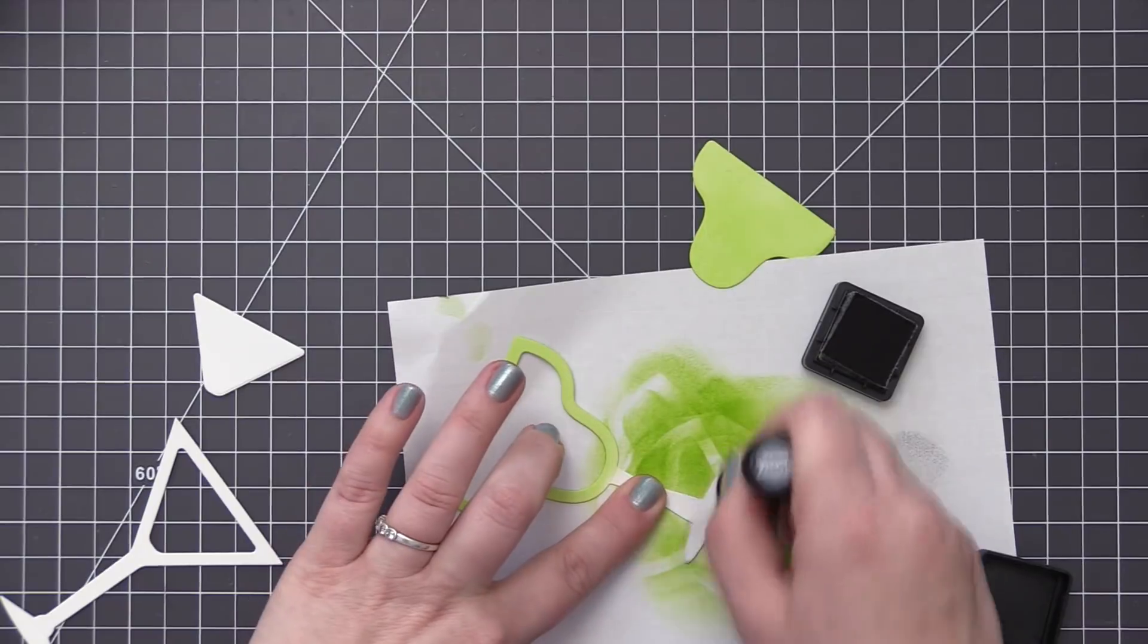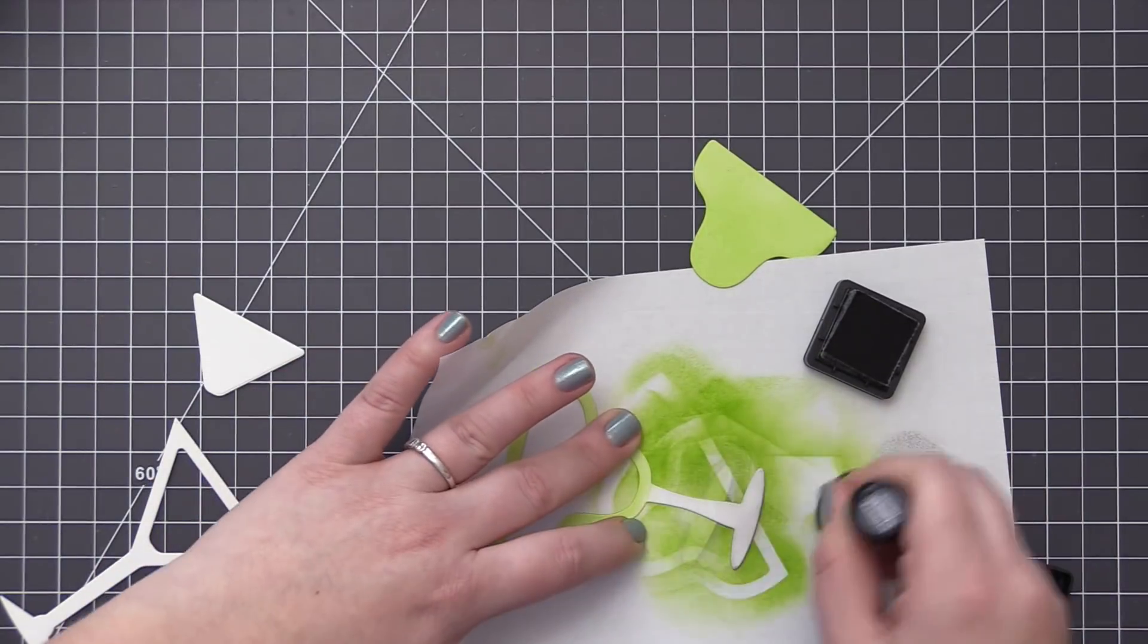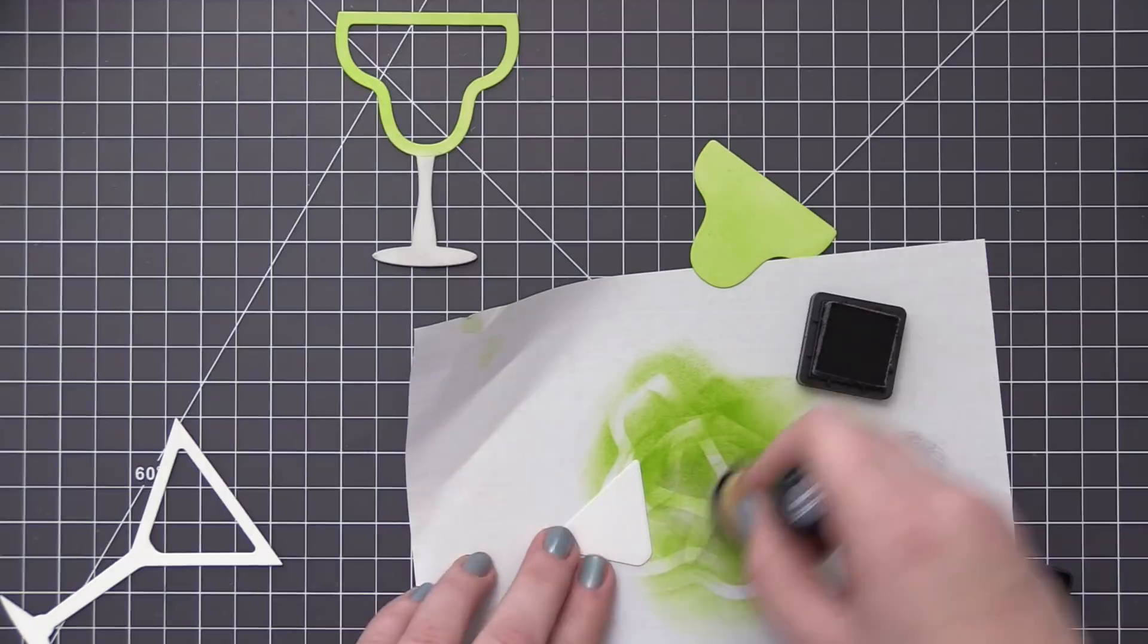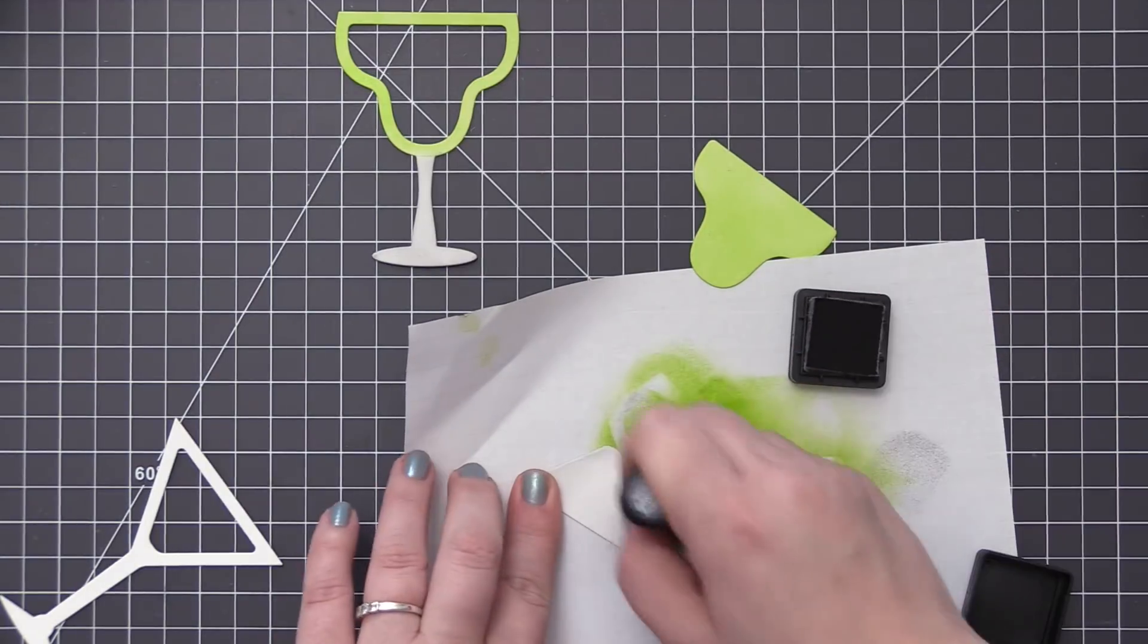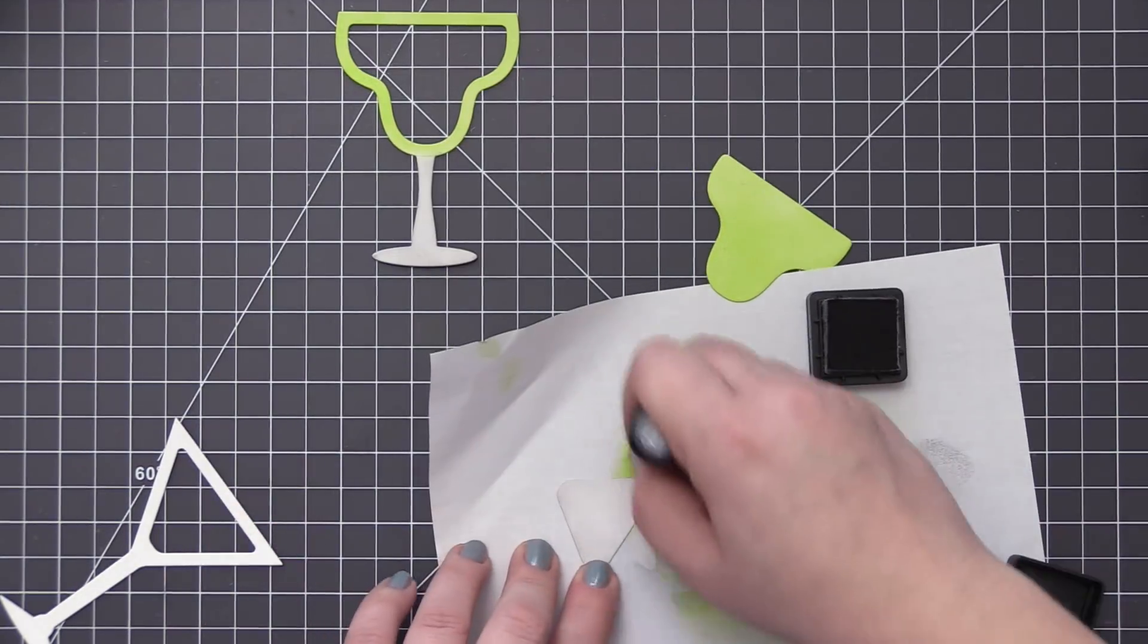For the bottom portion we're going to use hickory smoke and I'm going to be very light-handed with this. I don't really want the glass to appear gray, I just want it to appear clear so we're just doing a little bit of shading to kind of give it that effect.